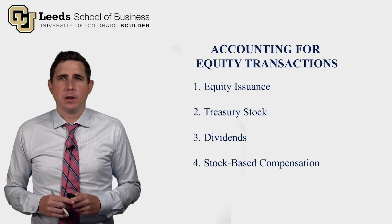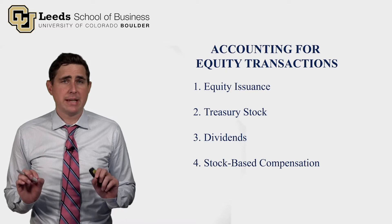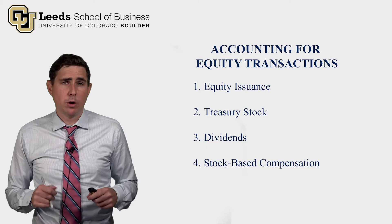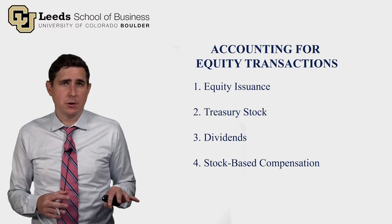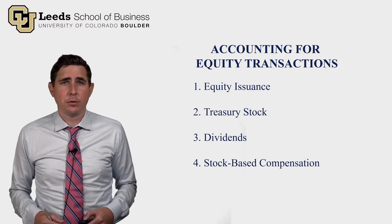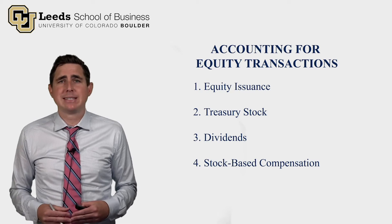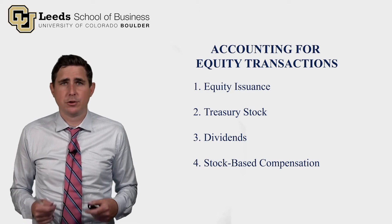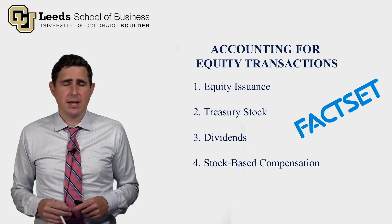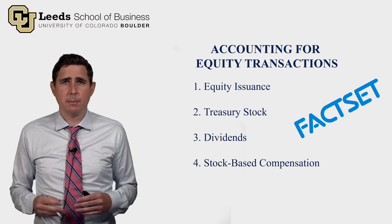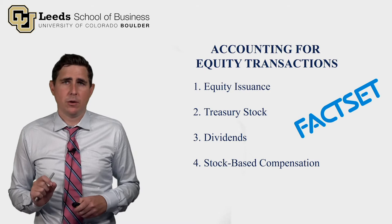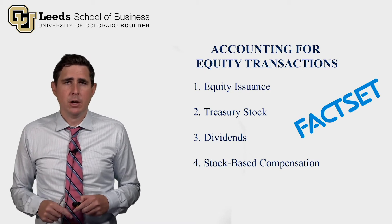This video covers accounting for equity transactions. We'll go through examples of equity issuance and the journal entries involved, treasury stock — when a company repurchases its own stock and sometimes resells it — dividends, and stock-based compensation. We're going to pretend we are FactSet, a public company that provides data and information to investors.